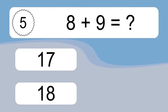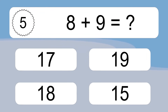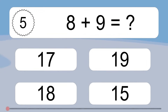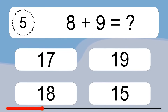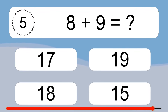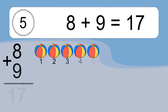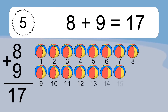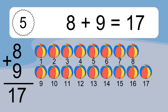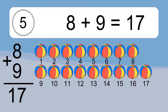8 plus 9 equals what? 8 plus 9 equals 17. Let's count it. 1, 2, 3, 4, 5, 6, 7, 8, 9, 10, 11, 12, 13, 14, 15, 16, 17.